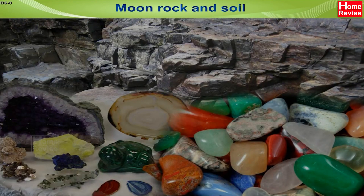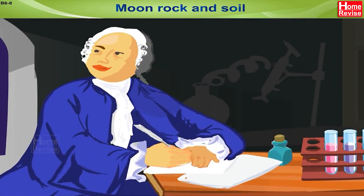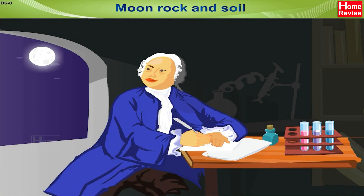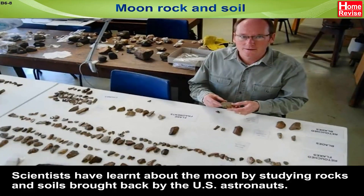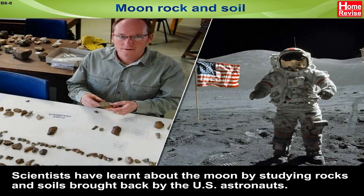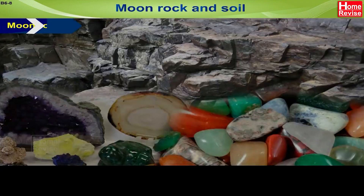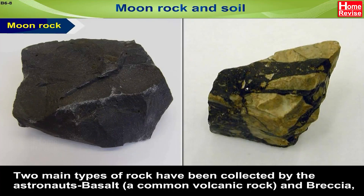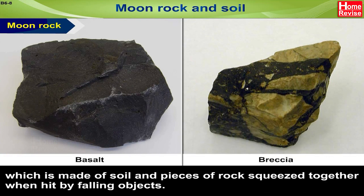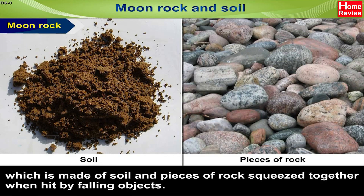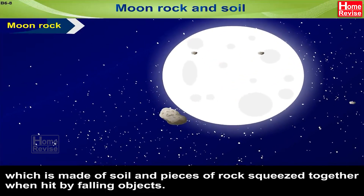Moon Rock and Soil. Have you ever wondered how the scientists found out about the moon? Scientists have learned about the moon by studying rocks and soils brought back by the U.S. astronauts. Two main types of rock have been collected by the astronauts: basalt, a common volcanic rock, and breccia, which is made of soil and pieces of rock squeezed together when hit by falling objects.